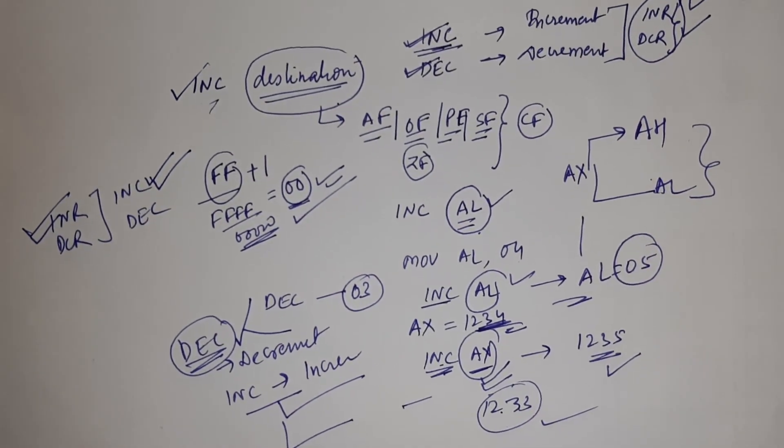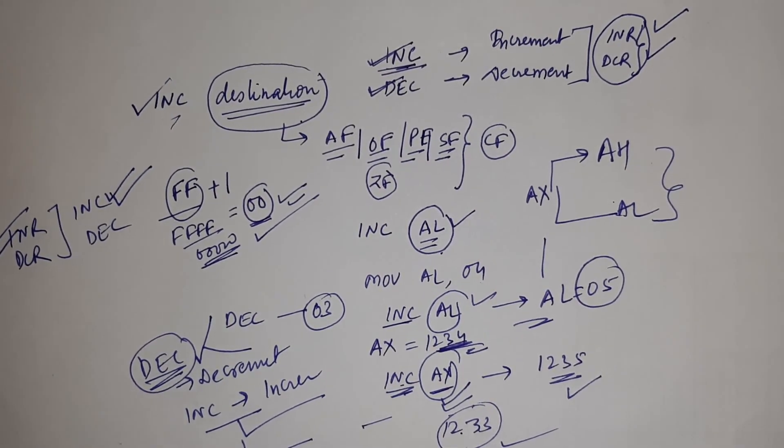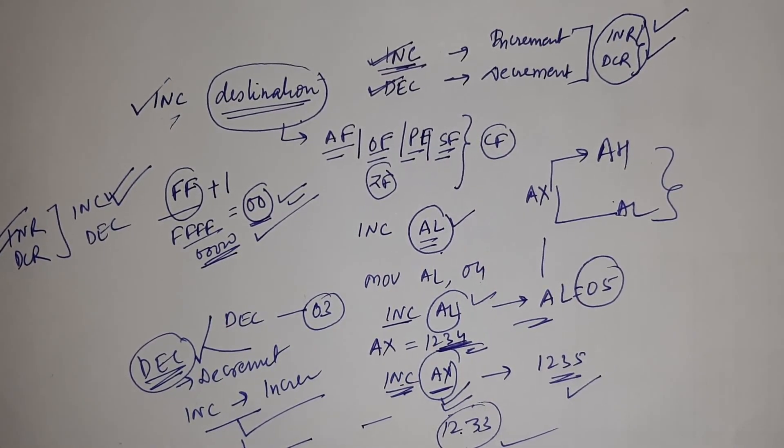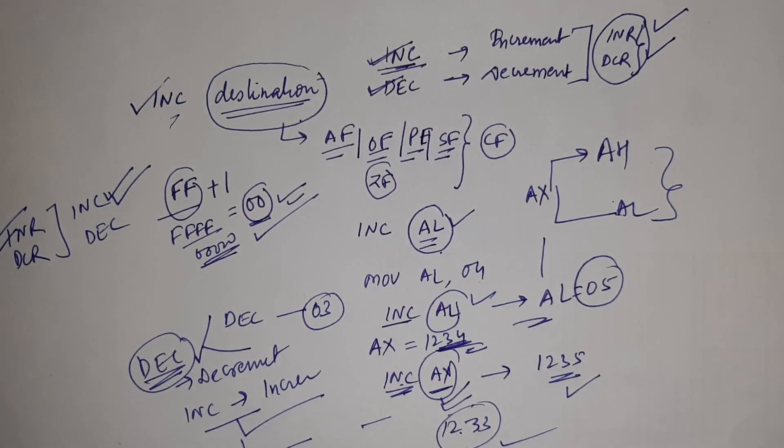This is all about this video. I hope you got my point that basically INC and DEC are used for increment and decrement of the content of memory or register which is given at the destination position. So this is all about INC and DEC in 8086 microprocessor. Thank you for watching.